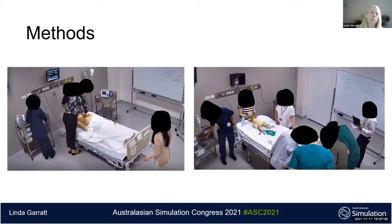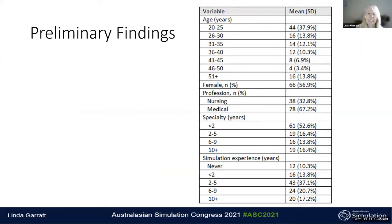A self-reported engagement scale asked participants if they knew what they needed to do during the simulation, whether it was a valuable and enjoyable learning experience, and how engaged they felt. After all data was collected, the recorded videos were watched and each participant was scored using the adapted Jang scale, assessing their attention, effort, and persistence within the simulation. In terms of results, 118 participants were included out of 143 potential eligible learners, giving a representation rate of 82 percent.